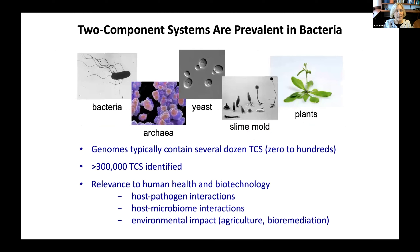Two-component systems are prevalent in bacteria and present in all domains of life. However, they're not found in animals. Bacterial genomes typically encode several dozen two-component systems, and more than 300,000 two-component systems have been identified in bacterial genomes to date. Adaptive responses are critical for bacteria to survive and thrive, and they're especially important for bacteria-host interactions, both pathogenic and beneficial. Beyond human health, two-component systems are also of importance in environmental microbiology, for example, in bioremediation and agriculture.